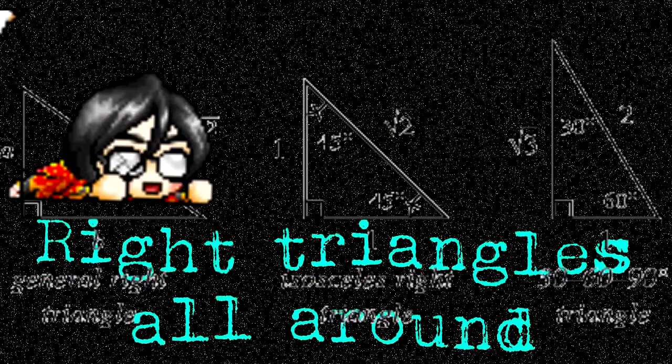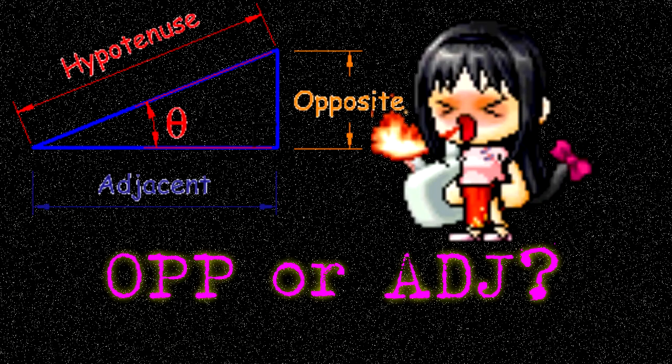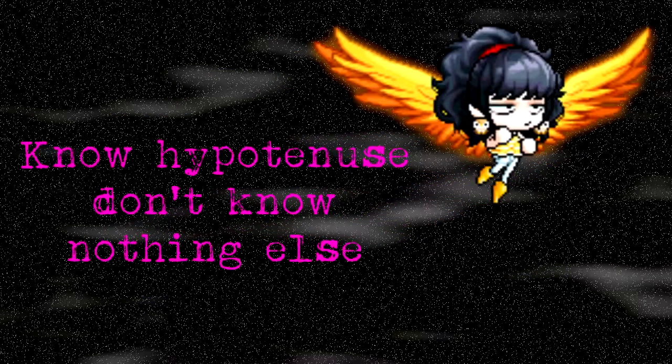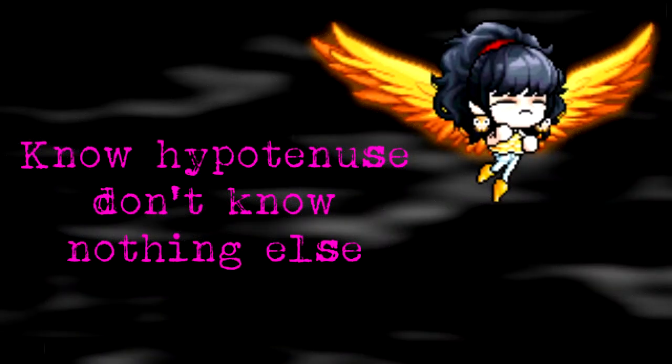Can't stop dreaming, bad per cow, wide triangles all around. Angle sounds with special names, O-P-P or A-D-J. No hypotenuse, don't know nothing else I'm screwed.